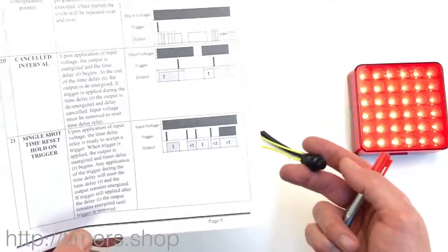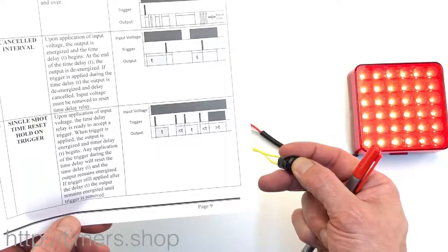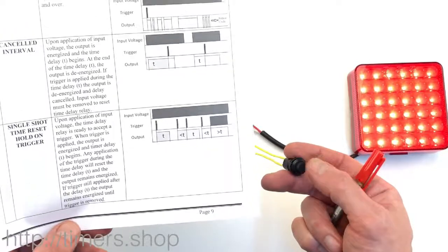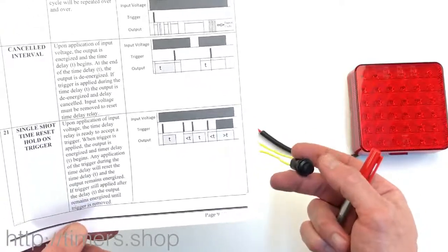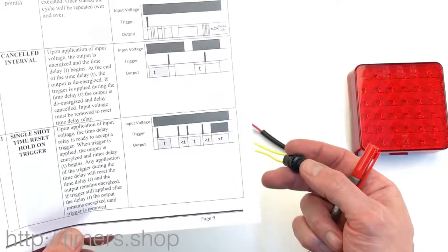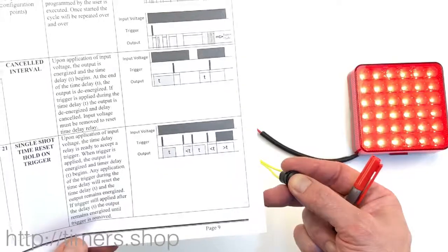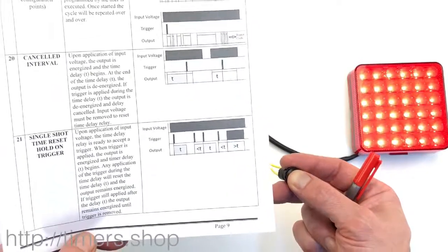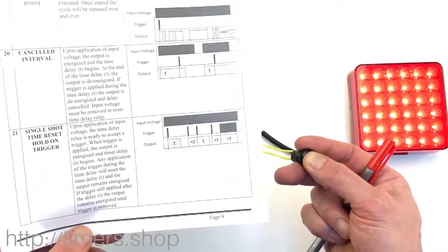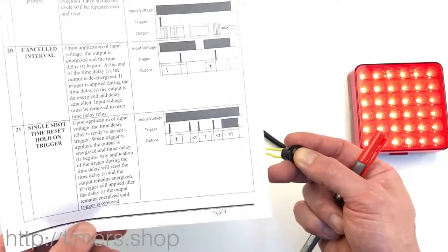So if I count one, two, three and push it one more time and release it, it's going to count down to five, and then it's going to keep the output on until I release the button.